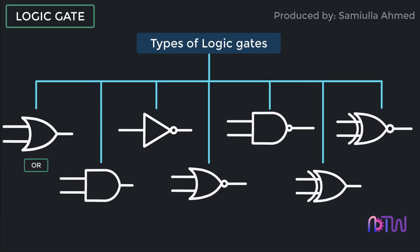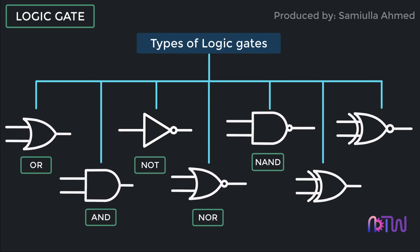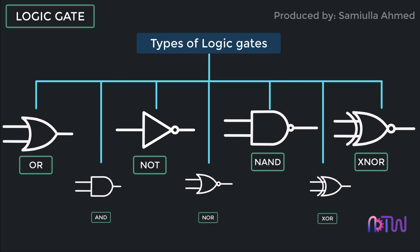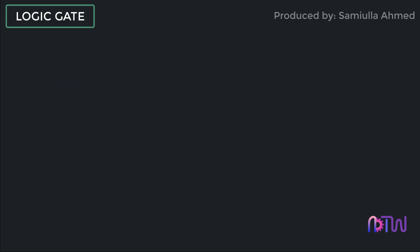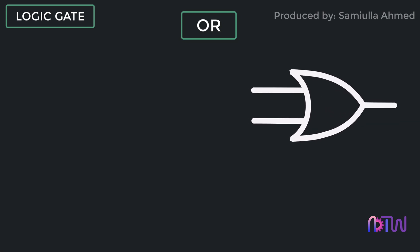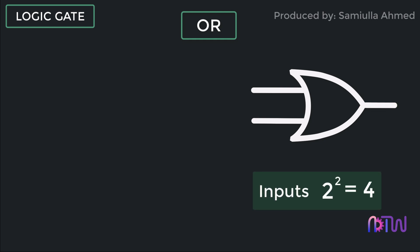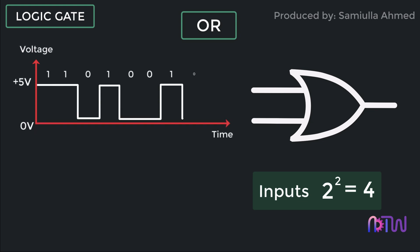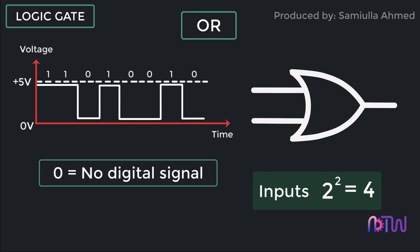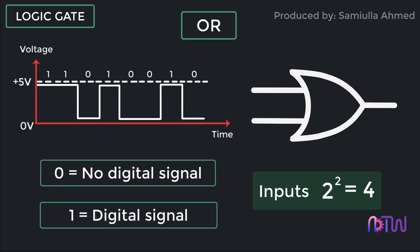The types of logic gates with their symbolic representation are: OR gate, AND gate, NOT gate, NOR gate, NAND gate, exclusive OR gate, and exclusive NOR gate. Let's start with the first gate, which is the OR gate. The OR gate has two inputs and one output, therefore there can be two raised to two possible inputs. Digital signals are represented in zeros and ones — zero indicates no digital signal and one indicates there is a digital signal.